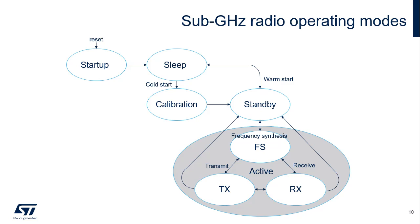On a cold start, the calibration phase is used to calibrate some sub-Gigahertz radio blocks, like the internal oscillator's frequency, radio phase-locked loop, radio analog-to-digital converter, and image rejection. Only once in standby state, the firmware can communicate with the sub-Gigahertz radio through the sub-Gigahertz serial peripheral interface and program the configuration parameters before entering any active state.